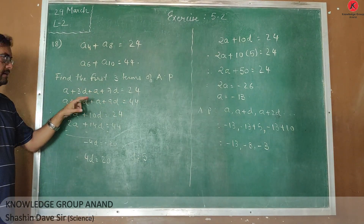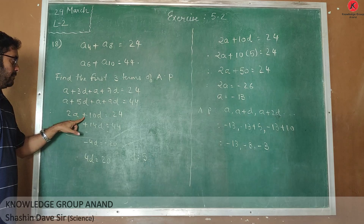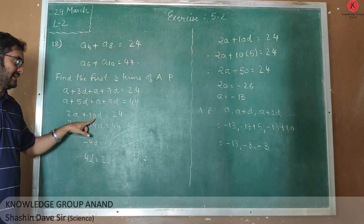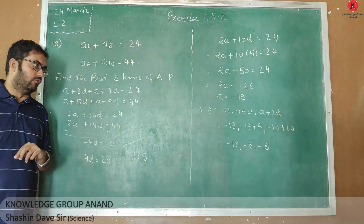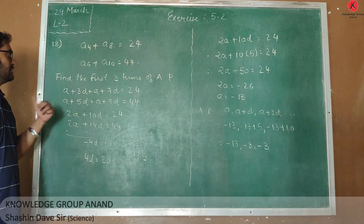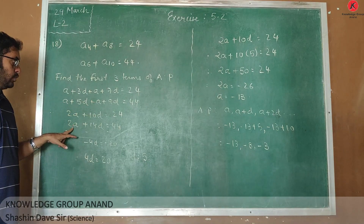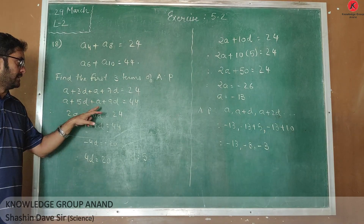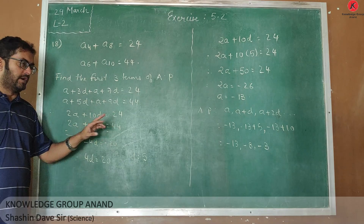Adding the first equation: A plus A gives 2A, and 3D plus 7D gives 10D, equal to 24. Similarly, A plus A gives 2A, and 5D plus 9D gives 14D, equal to 44.